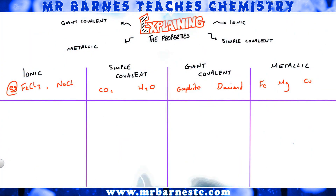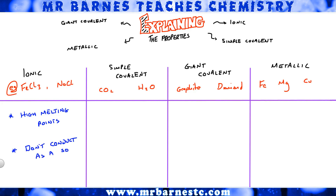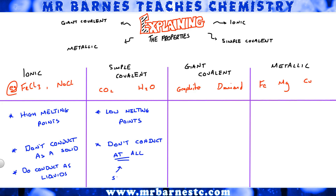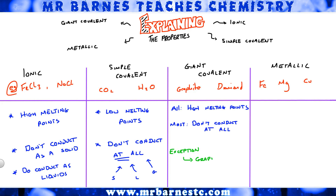Looking at ionic compounds — iron chloride and sodium chloride — sodium chloride has a high melting point, it doesn't conduct electricity as a solid, but it does conduct as a liquid. For simple covalent compounds like carbon dioxide and water, they have low melting points and don't conduct at all — solid, liquid, or gas. For giant covalent, all of them have high melting points. Most don't conduct electricity, with the exceptions of graphite, graphene, and nanotubes, which do conduct.